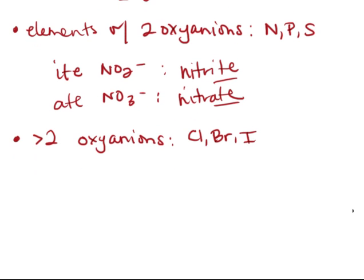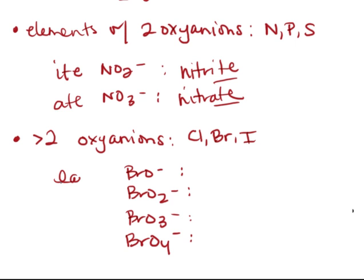If we looked at the bromine examples, we would have BrO-, BrO2-, BrO3-, and BrO4-. You'll notice that these differ in the number of oxygens present. The one with the least number of oxygens has hypo out front and then bromite.